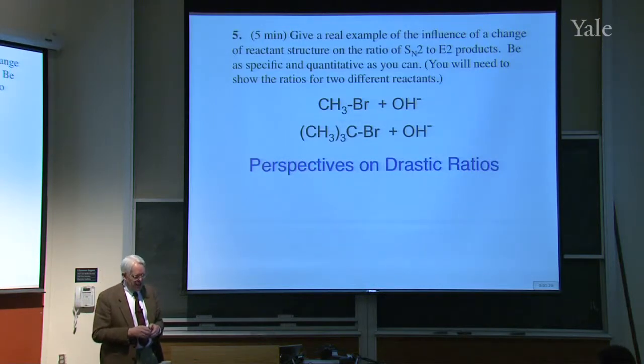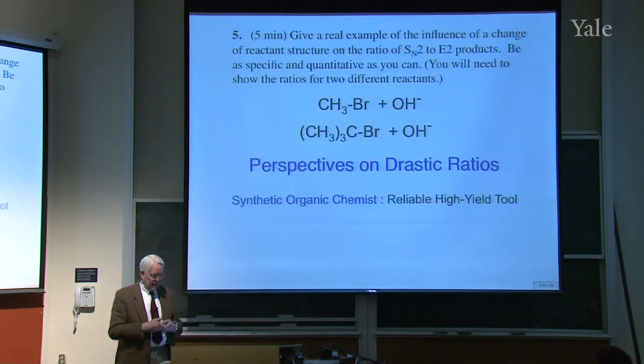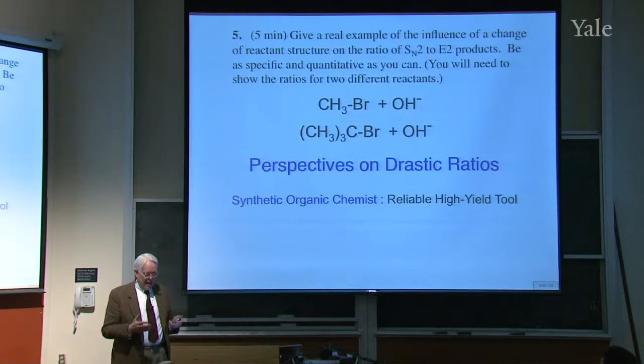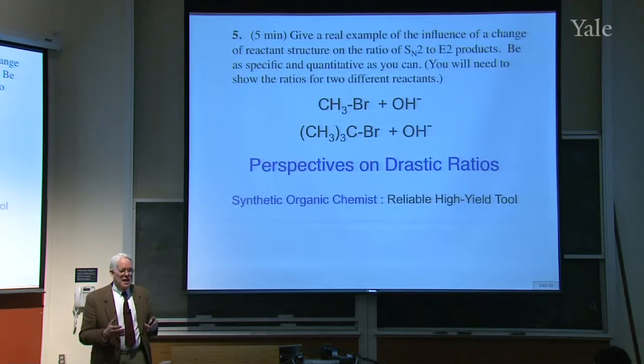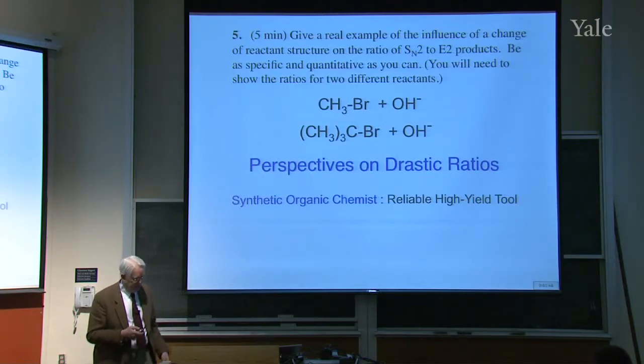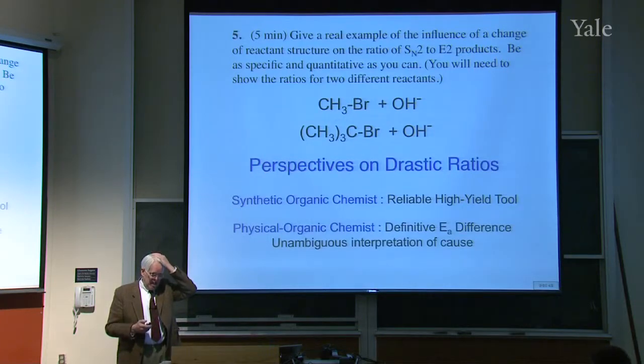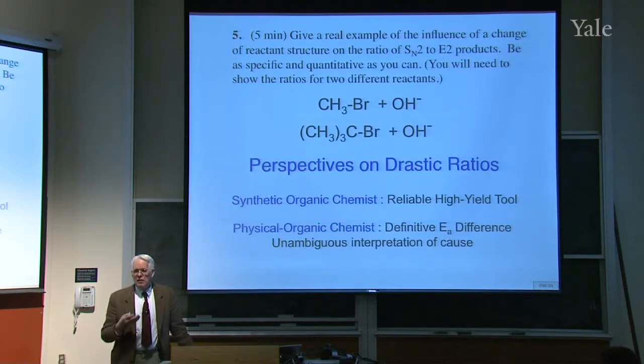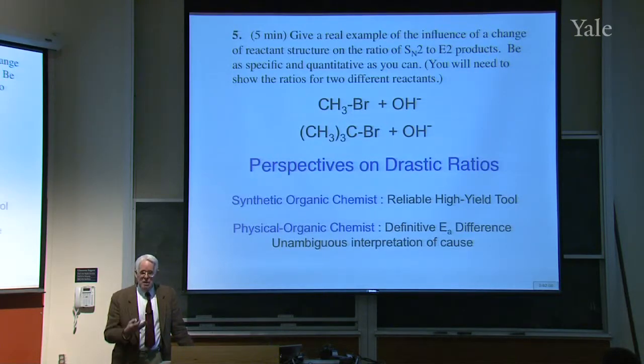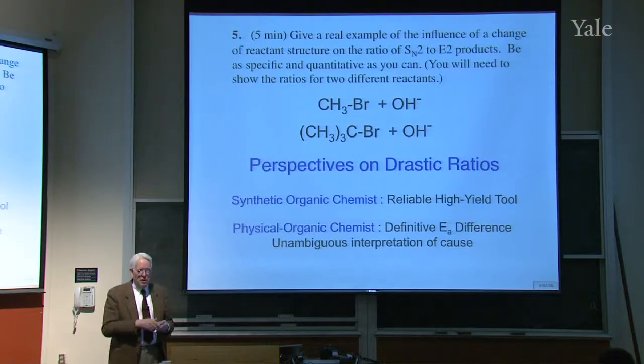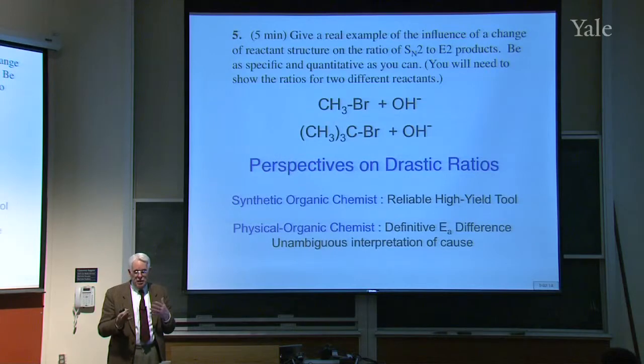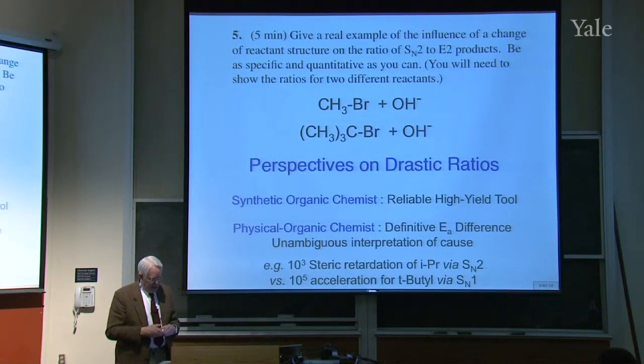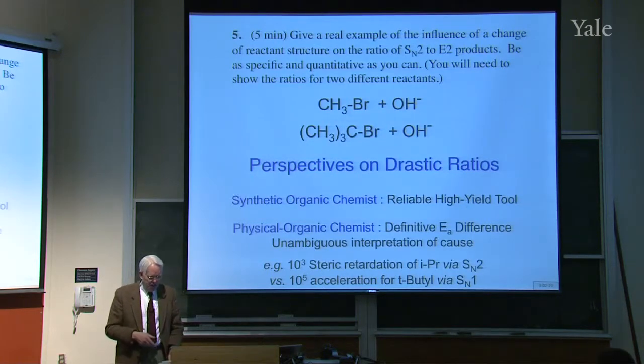These are drastic ratios. There are two different perspectives on situations where you have drastic ratios. One is the perspective of a synthetic organic chemist, who says it's great to have drastic ratios, because then you have a reliable way to get a really high yield. It's not going to be 40-60 or something, and you have to separate it. You get all the stuff you want.